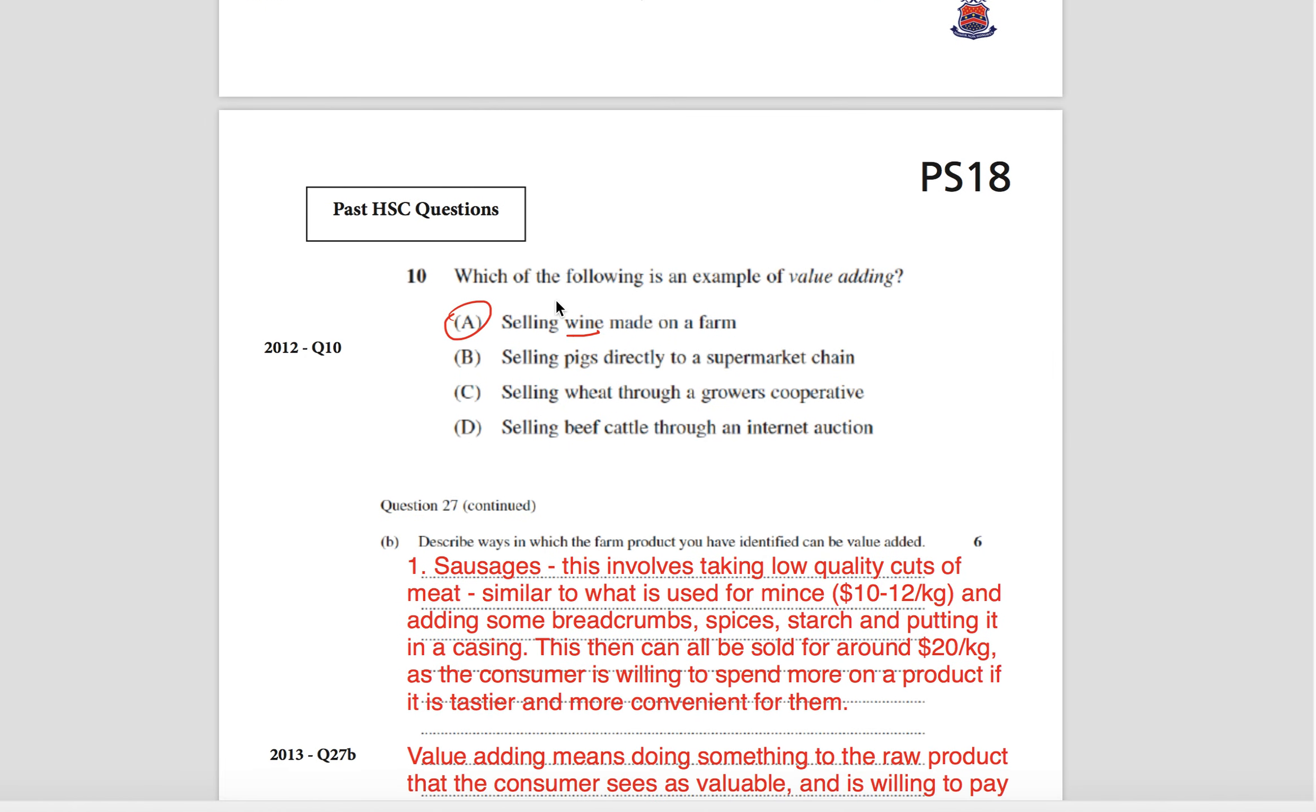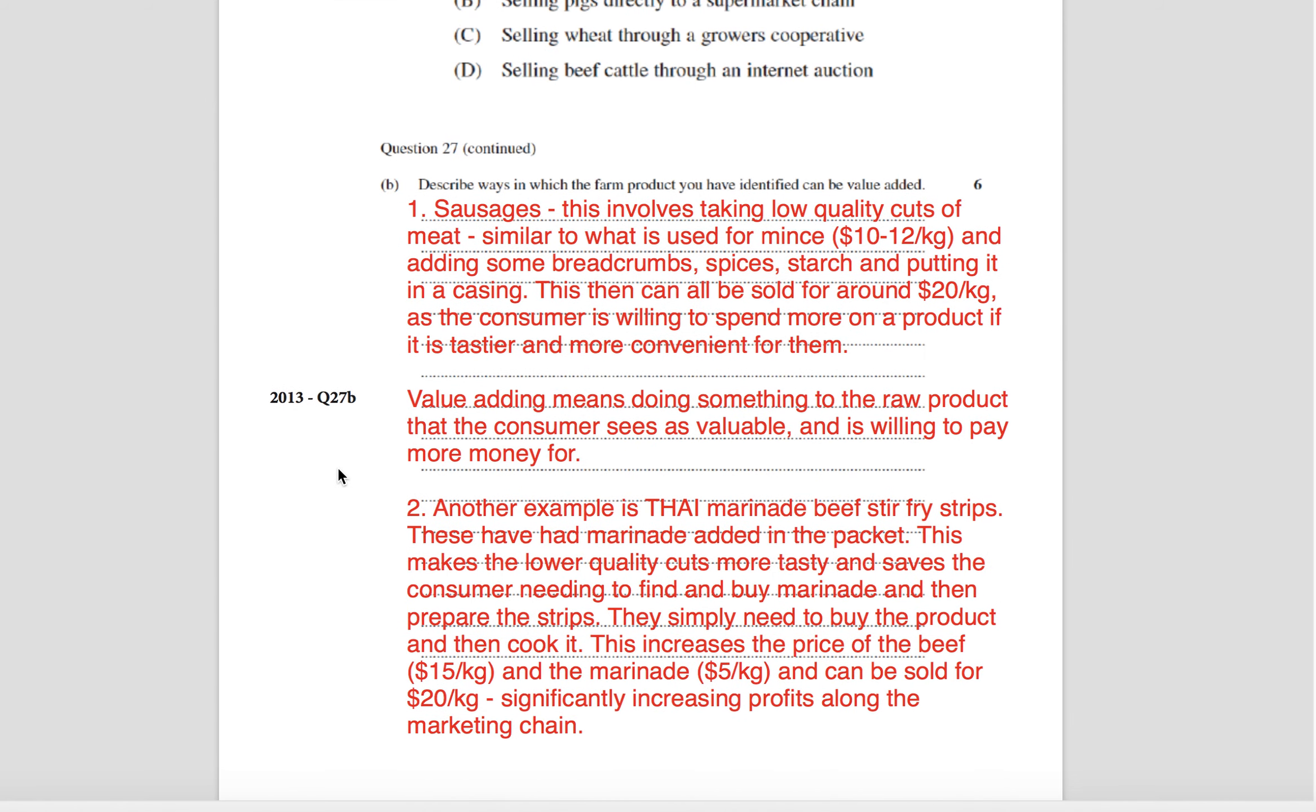Past HSC questions: which of the following is an example of value-adding? Selling wine made on the farm, pigs directly to the supermarket, wheat through growers cooperative, and beef cattle through an internet auction. The bottom three are raw products, but wine has had something done to it because obviously the raw product is grapes and it's had something done to make it into wine. So that's the only example there of value-adding.